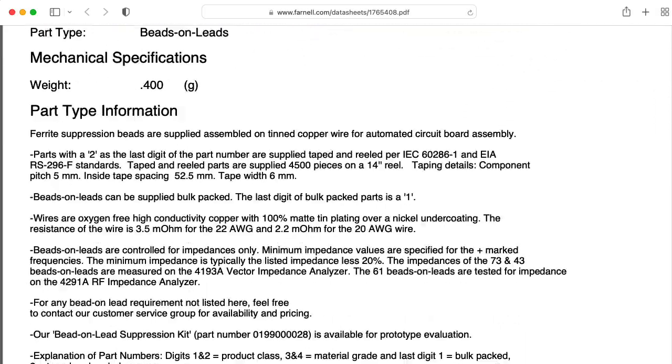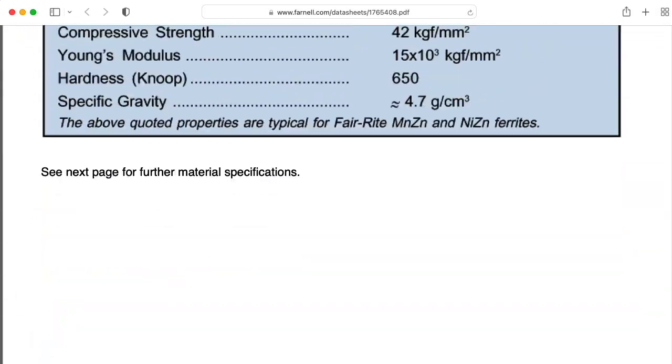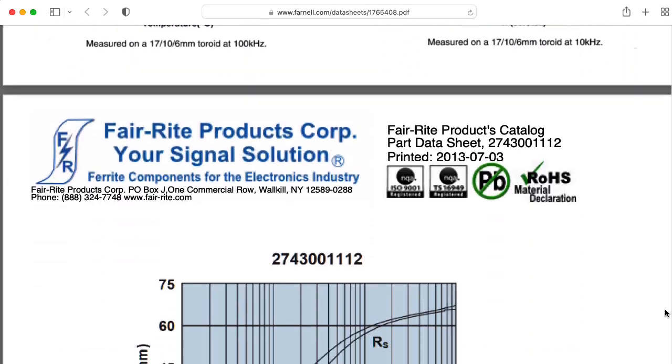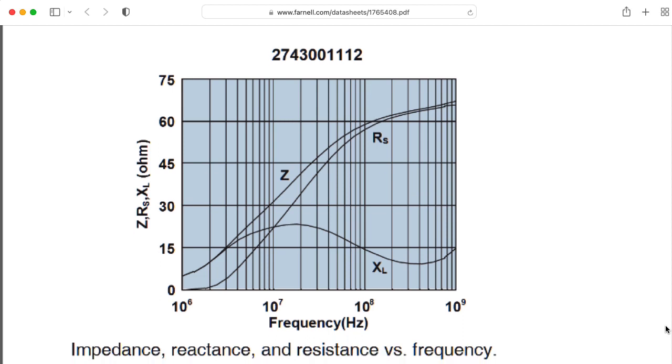Let's take a look at the data sheet for one of these. So ferrite beads are kind of like inductors. They're designed to choke out high frequencies, but they're more complicated than that. Here you see the reactance as a function of frequency, and it's weird. But there's also a resistive component that's a function of frequency. So the behavior is more complicated than you would get from your standard inductor formula.